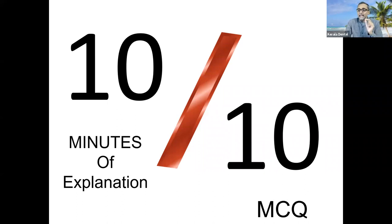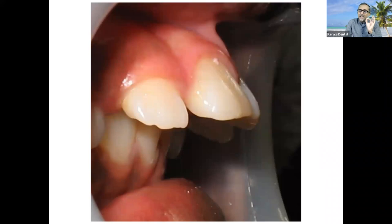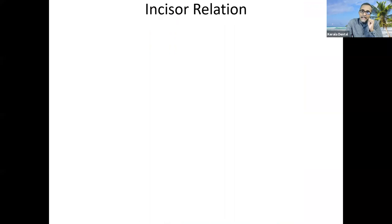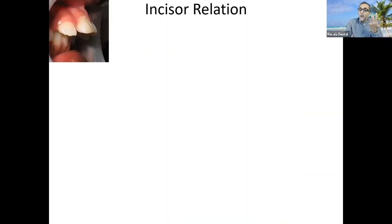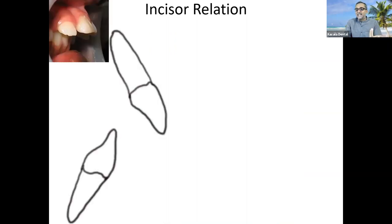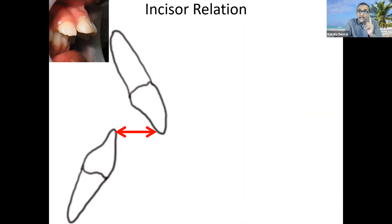Let me quickly go into today's topic, directly starting with one patient scenario. We have a severe overjet patient in front of us. The moment you see severe overjet, think incisor relationship. Overjet should be 1 to 3 millimeters as normal, and anything more than that is increased overjet. So many MCQ questions are coming related to overjet, overbite, and all that — please make sure you have an idea about that.